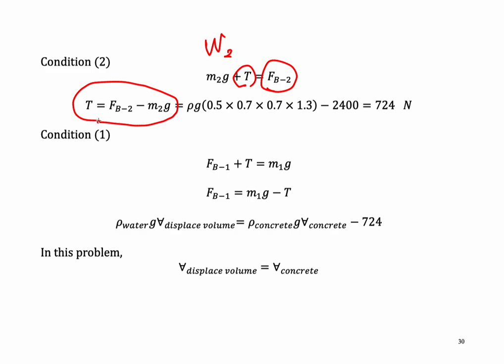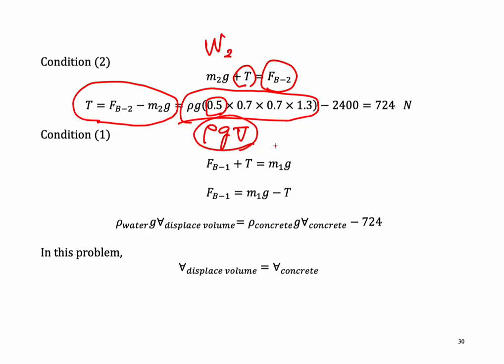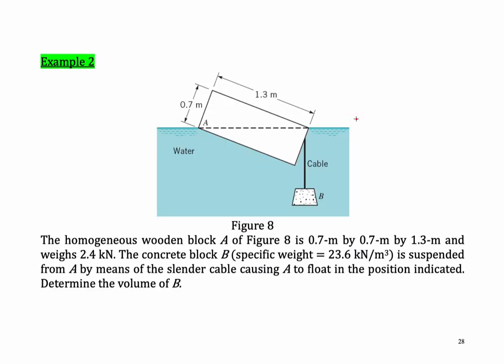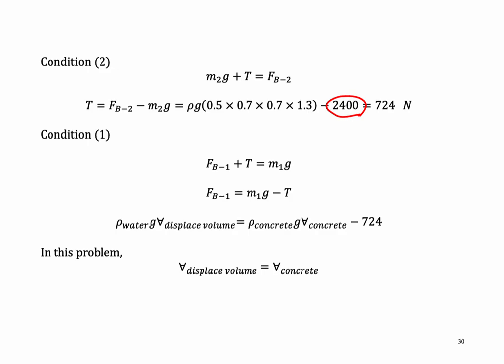We calculate the force of buoyancy using rho, G, and volume. The displaced volume is calculated as 0.5 times 0.7 times 0.7 times 1.3. The 0.5 factor is because this volume is half of the rectangular block's volume. Subtracting the weight of 2,400 newtons (2.4 kilonewton as given), we get the tension of the cable as 724 newtons.